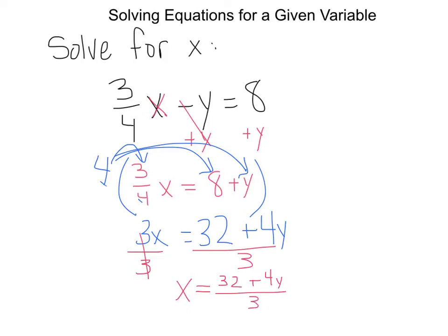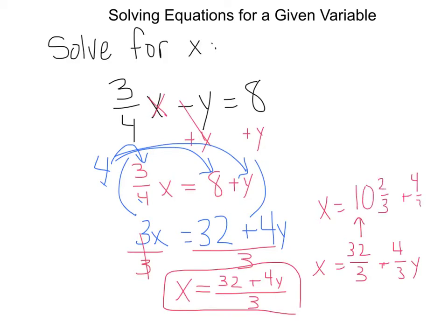Now, there's a couple ways you could display your answer here. You can leave it like this since I'm looking and I see that 32 is not divisible by 3 a whole number of times. And I see that 4y is not divisible by 3. So what I would actually do is I would just leave this as it is. Some people might like to rewrite it so that they kind of break up the terms. And they would say x equals 32 thirds plus 4 thirds y. That's perfectly fine. And still other people might want to turn this improper fraction into a mixed number. And say, well, 3 goes into 32 ten times with 2 thirds left over plus 4 thirds y. So any one of these three equations would work for our final answer.